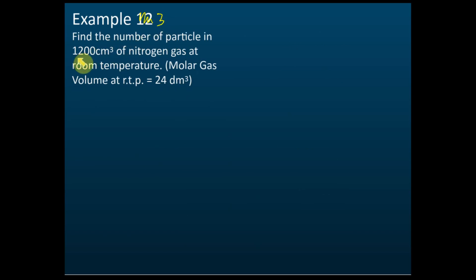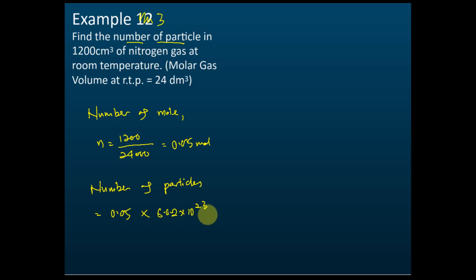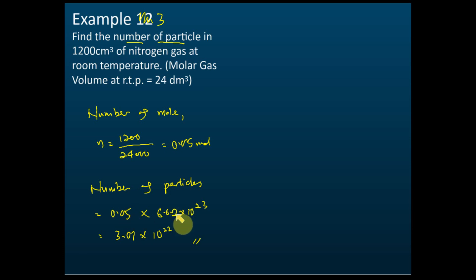Find the number of particles in 1200 cm³ of nitrogen gas. They want the number of particles, not the number of moles. From the volume, you find the number of moles first, and then from the number of moles you find the number of particles by multiplying by the Avogadro constant.